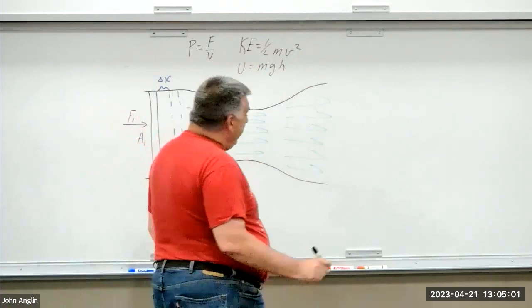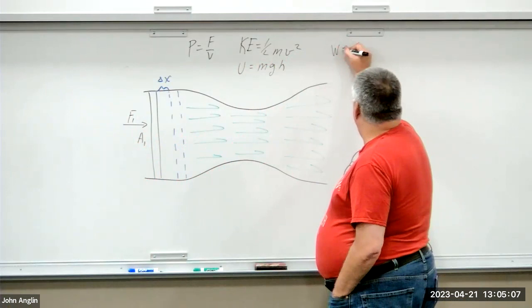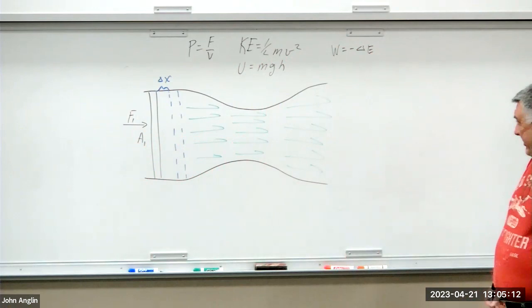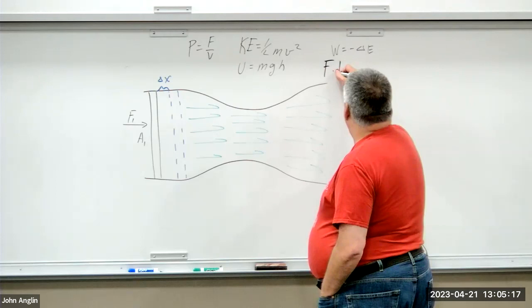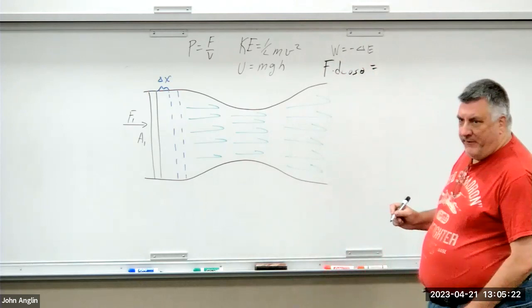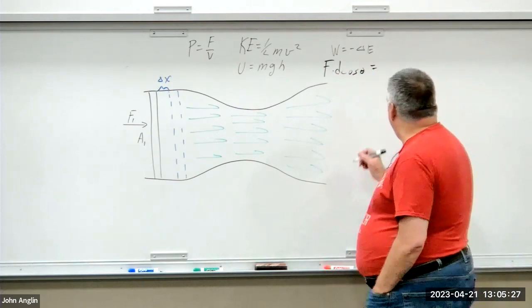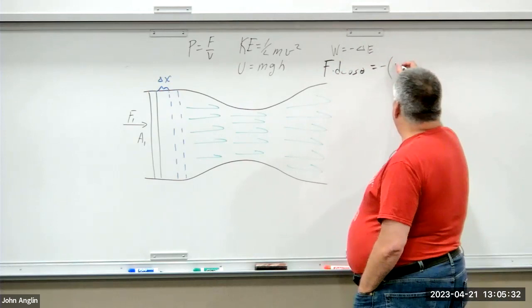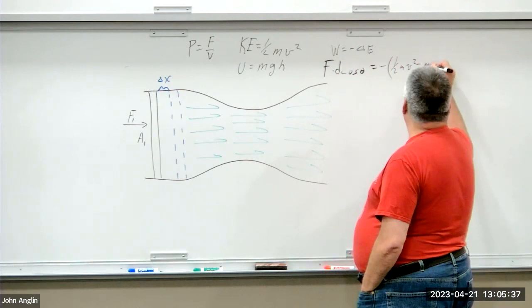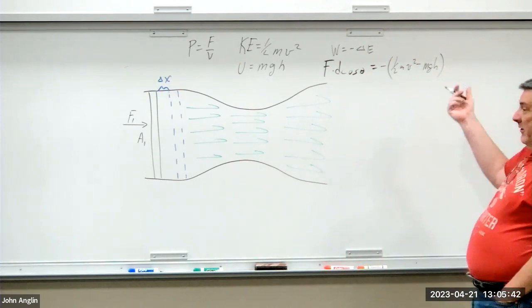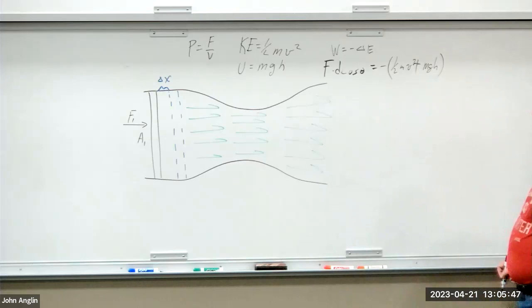We also know from our previous discussion of work and energy, we have the work-energy theorem that says work is the negative change in energy. We know that work is force times distance times cosine of the angle between the applied force and the distance traveling over. And we know, remember the negative sign, we know that our delta E is our KE, which is one-half mv squared minus mgh, or another way, it's the sum of the energies, right? So, this is all we know.